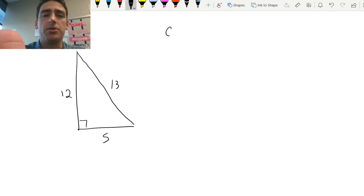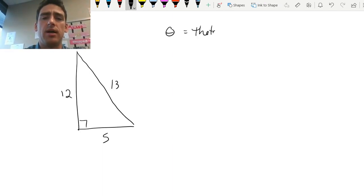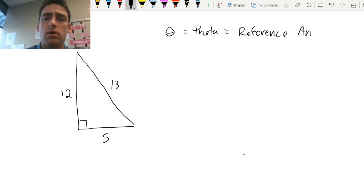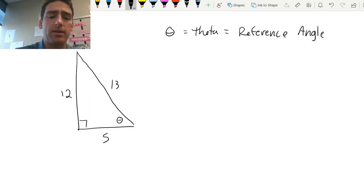I'm going to use theta. So that's theta. I'm going to use that to indicate my reference angle. I'm going to go ahead and just put that in the corner. It doesn't actually matter at this point which one it is, as long as I declare which one. So that's my reference angle.